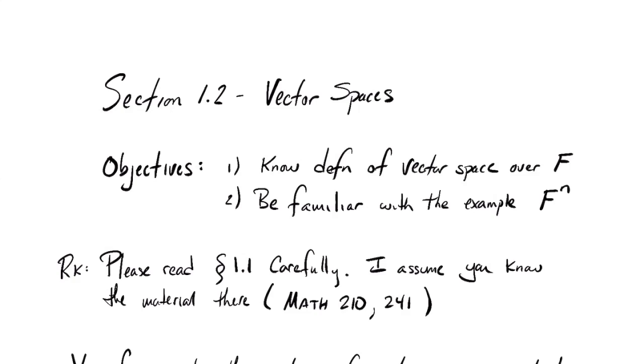Section 1.1 is important. It establishes some notation in the book, some terminology, and will remind you and give you a chance to review what you already know about Vector Spaces.